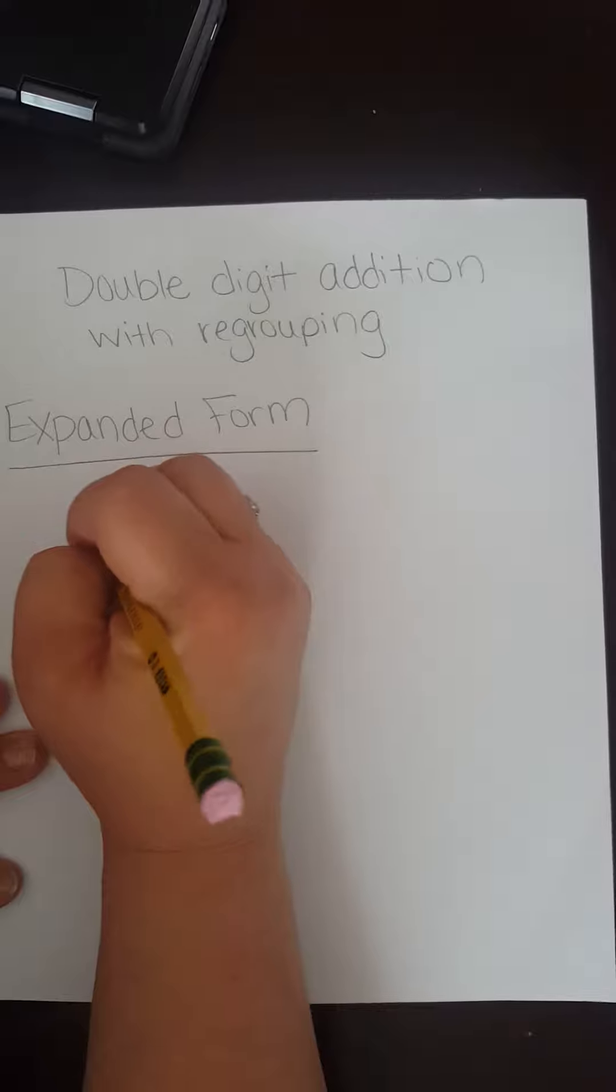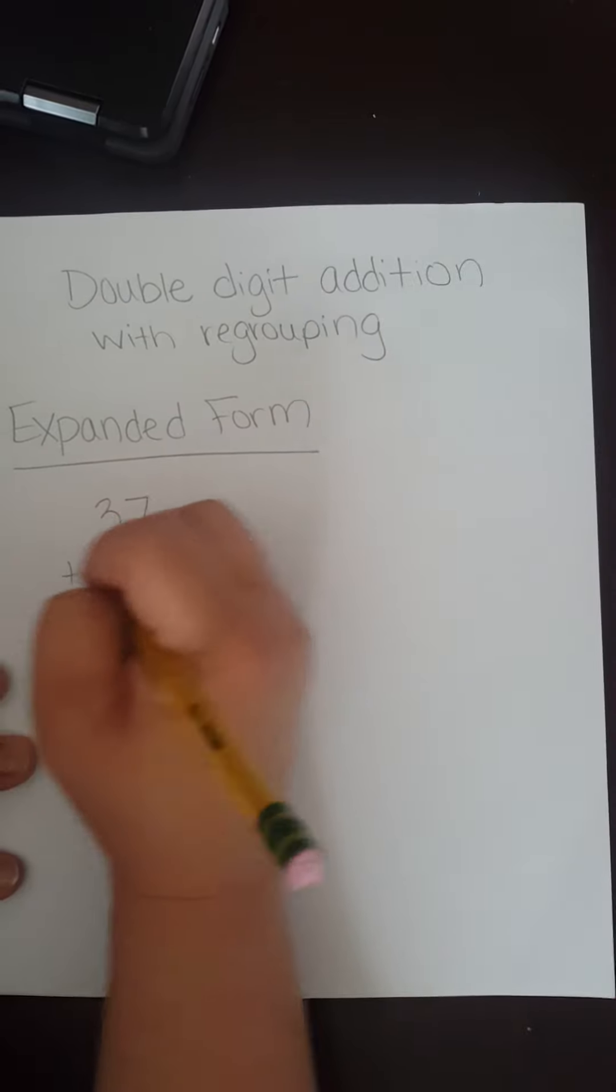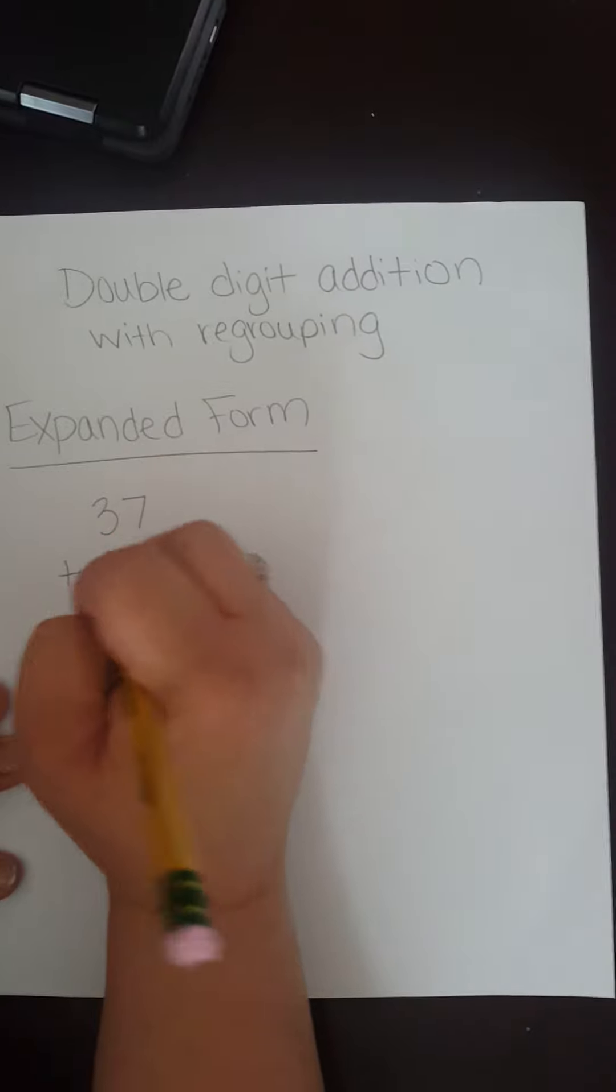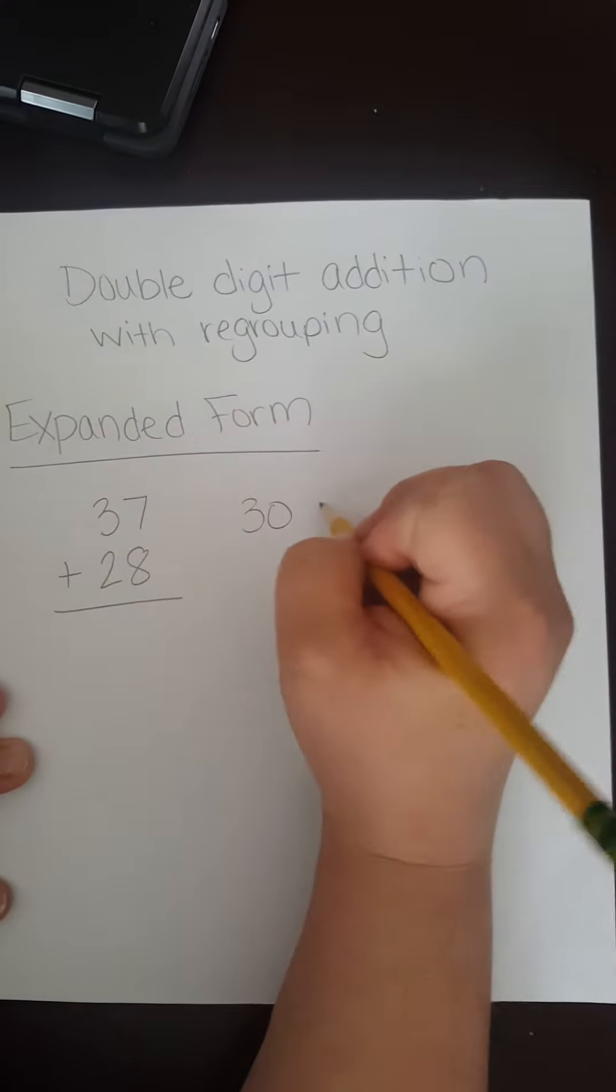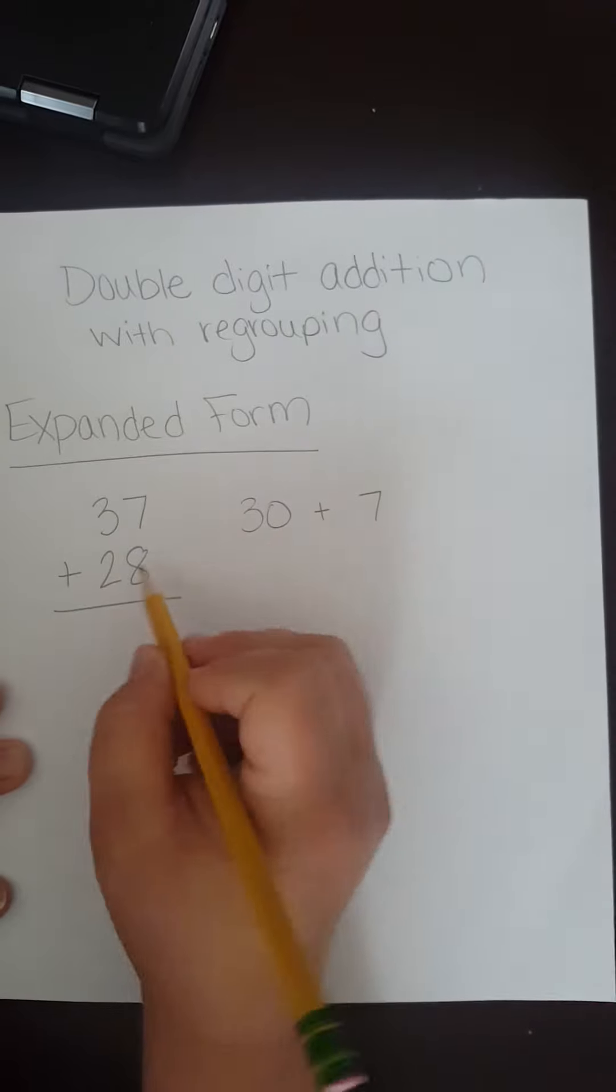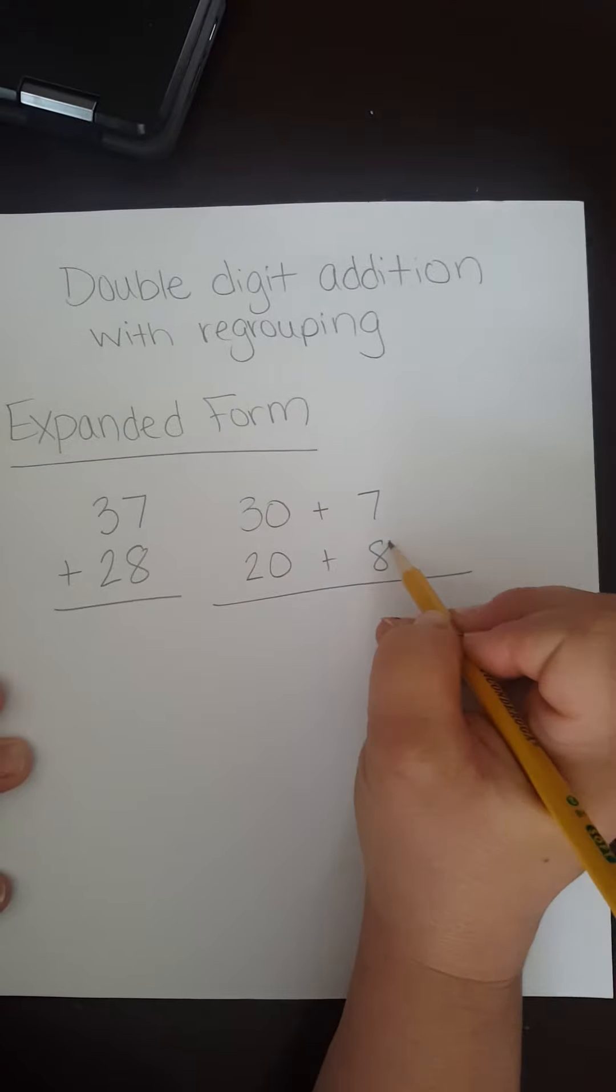Let's do 37 plus 28. Expanded form: 30 plus 7 and 20 plus 8.